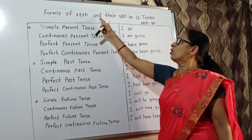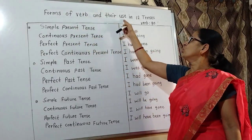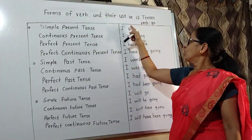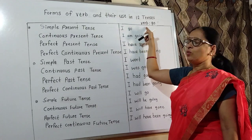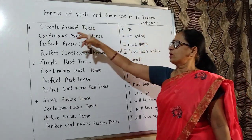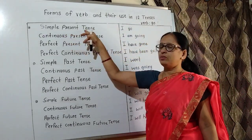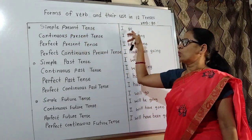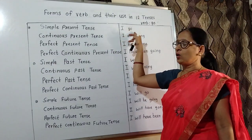Let's learn forms of word and their use in plain sentences. First of all, we take the word go. Simple present is I go.